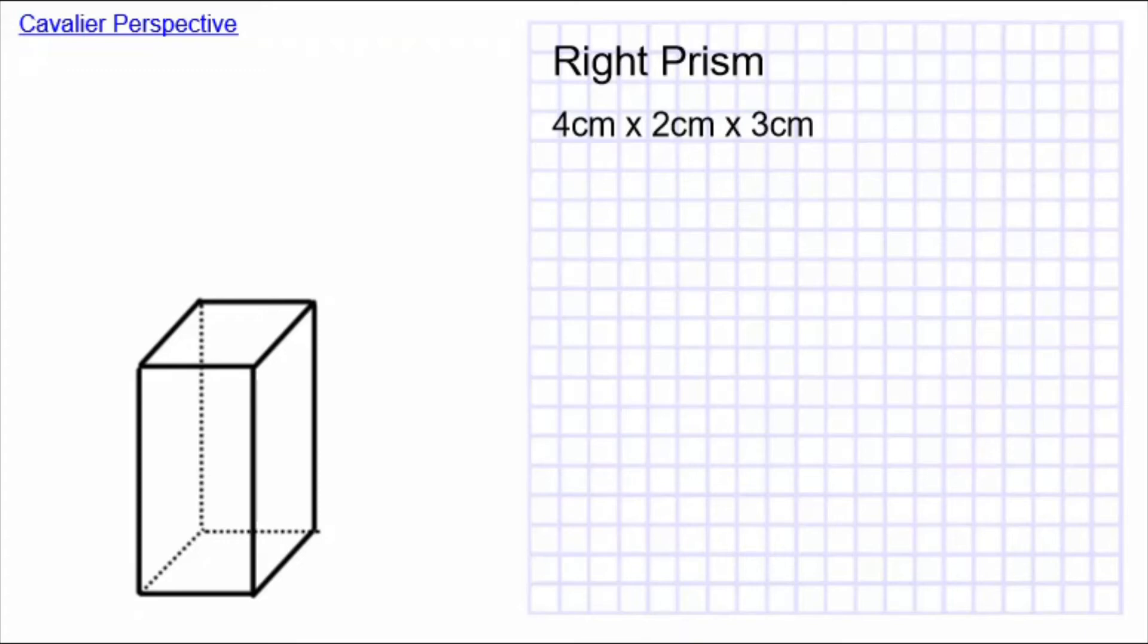Today's Daily Dose of Math is part of our series of videos about Cavalier perspective. In the first video, we drew a cube. Drawing a cube is a nice, easy assignment because it doesn't matter which face of the cube is on the bottom. It looks the same no matter what.